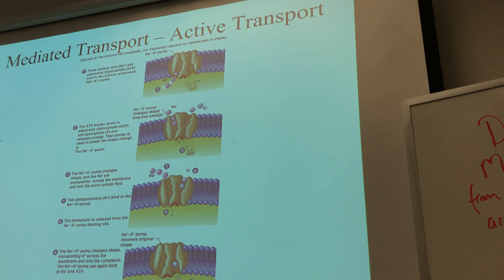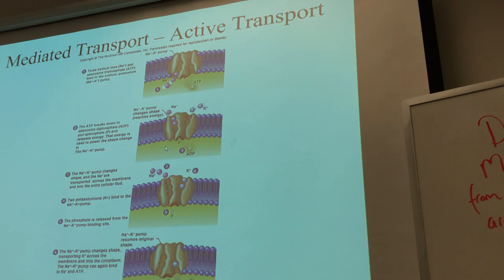With the sodium-potassium pump, you not only go against the concentration gradient for sodium — remember, sodium wants to come in, but you still need to pump it out — but you do it for potassium too. For every three sodiums you pump out, you bring two potassiums in. Eventually you'll have a lot of potassium on the inside and very little on the outside, yet you still want to pump it in. In the sodium-potassium pump, you're going against the concentration gradient for both sodium and potassium.